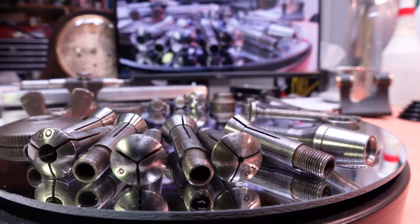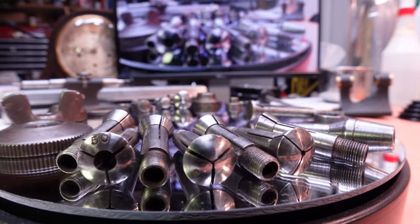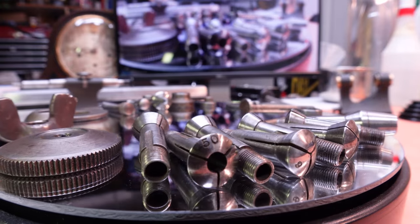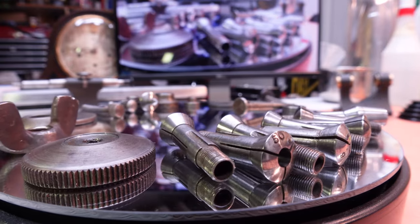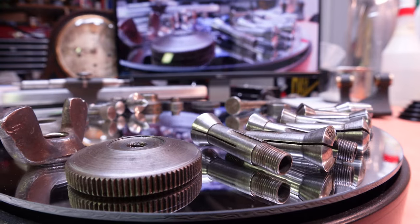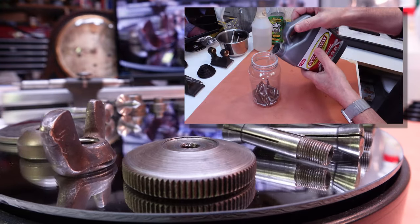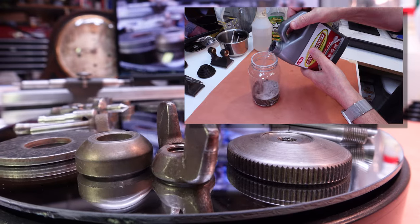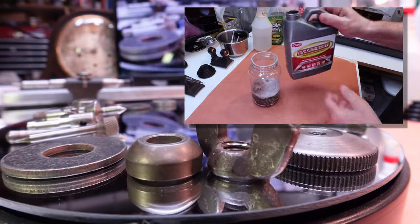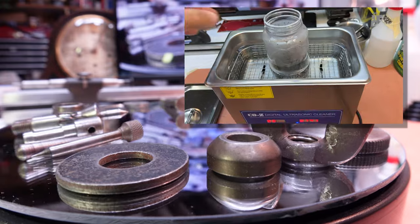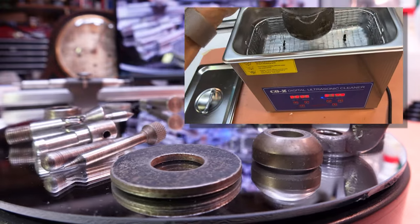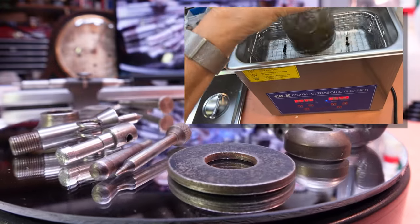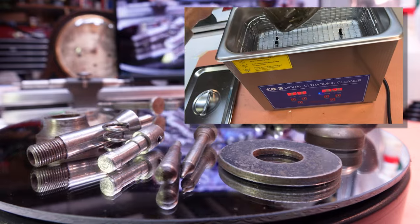The lathe came with a variety of attachments, chucks, and collets. While not necessarily in bad shape, many of the parts are dirty and have some light rust. Just for fun, I'm going to try cleaning everything in a bath of evaporust rust remover. But since evaporust can take up to 48 hours to do its job, I want to see what happens if we heat it up and put it in the ultrasonic cleaner. I'll make a separate video about that process and put a link in the description.